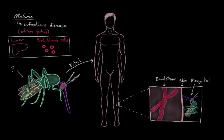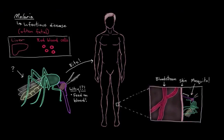Why are mosquitoes always biting us? It's because they need to feed on blood in order to survive — they're like little flying vampires. So she's trying to get at our blood by biting us. To do that, she will poke her proboscis — that's what this pointy mouth part is called — through our skin to access the blood vessels underneath. From there, she'll start to suck up some blood and fill up her little tummy.